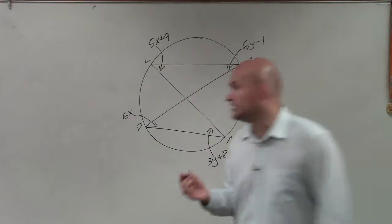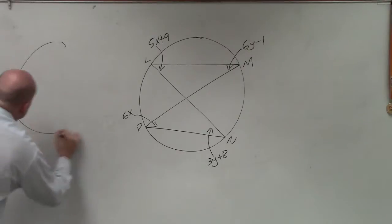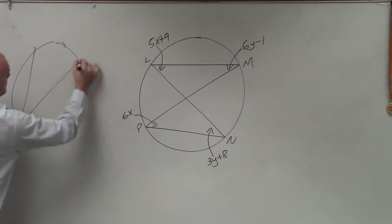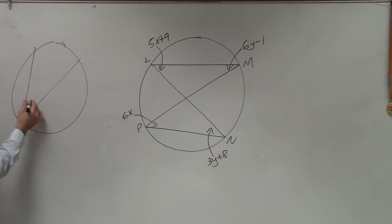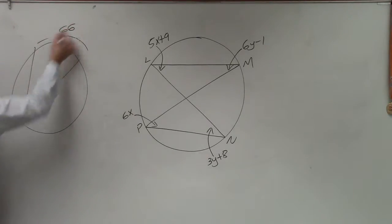in our notes that we talked about last class period is when you have two inscribed angles. Remember, when we talked about inscribed angle, if I said this was 33 degrees, we said that the arc measure was double that, which would have been 66 degrees.